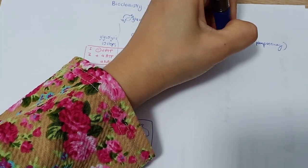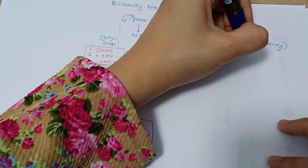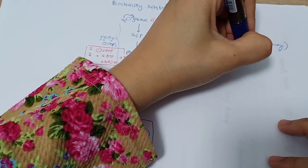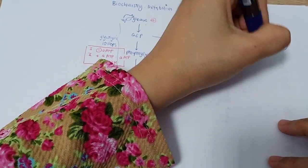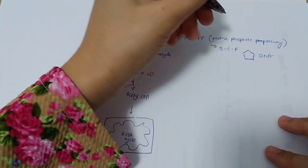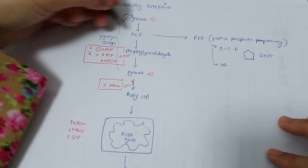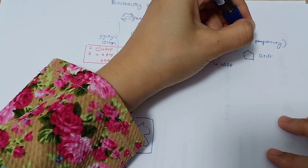The pentose phosphate pathway or shunt is basically to form the five-carbon phosphate, which is the backbone of DNA and also RNA itself. The second one is it will produce NADPH, which is the phosphate here.